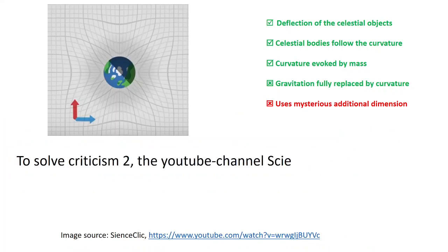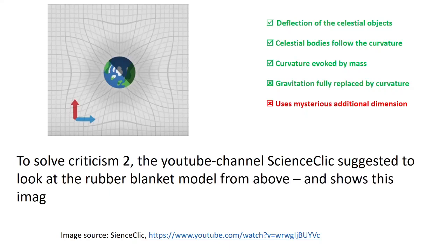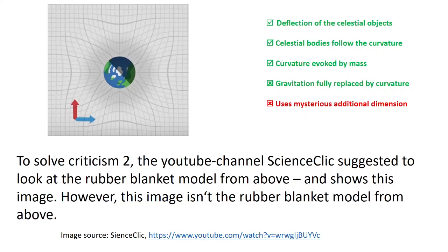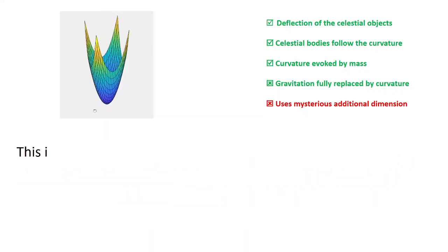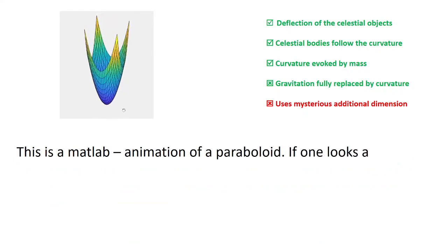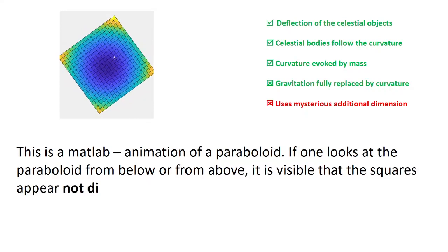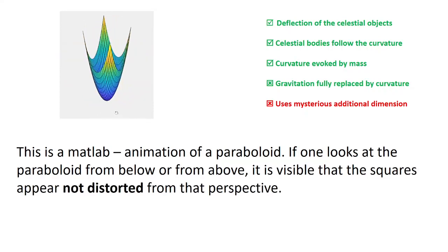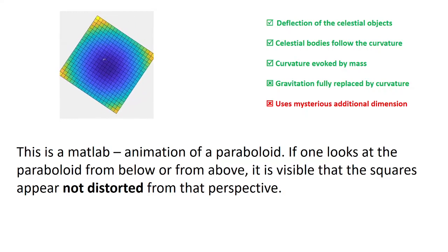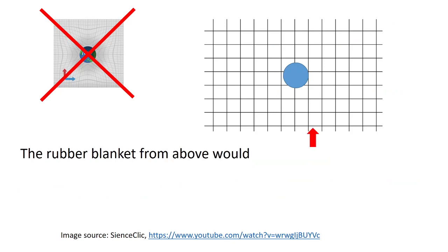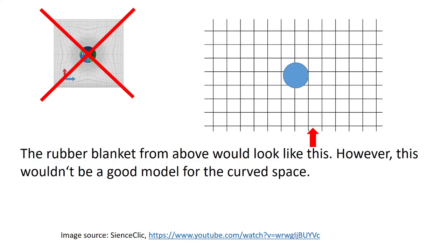To solve Criticism 2, the YouTube channel ScienceClick suggested to look at the rubber blanket model from above and shows this image. However, this image isn't the rubber blanket model from above. This is a MATLAB animation of a paraboloid. If one looks at the paraboloid from below or from above, it is visible that the squares appear not distorted from that perspective.